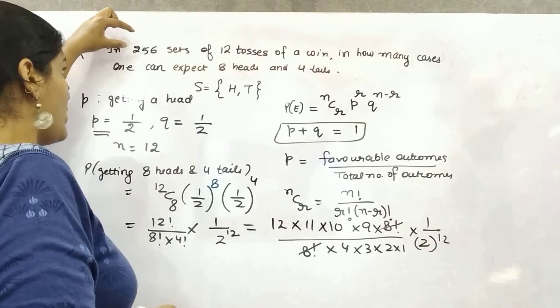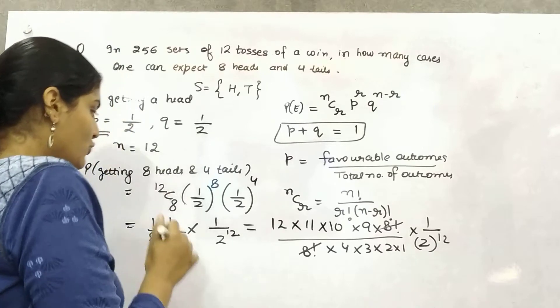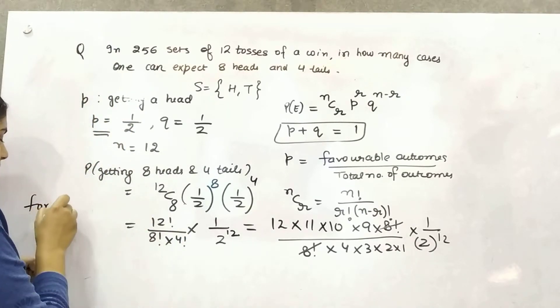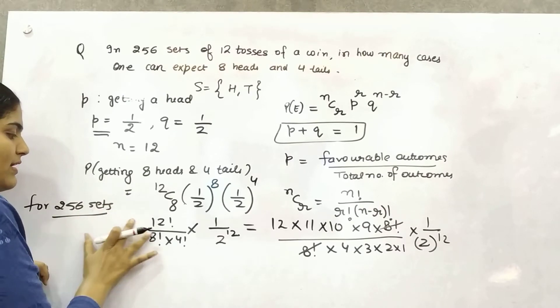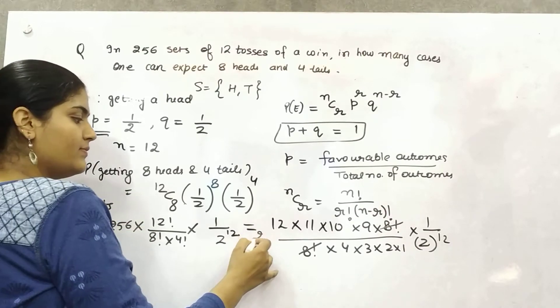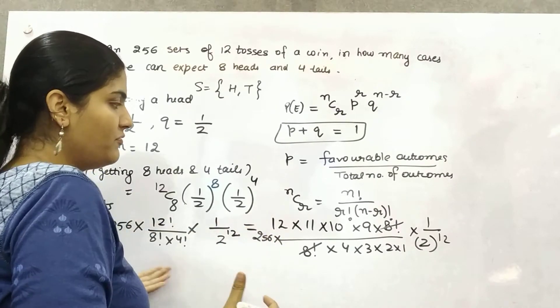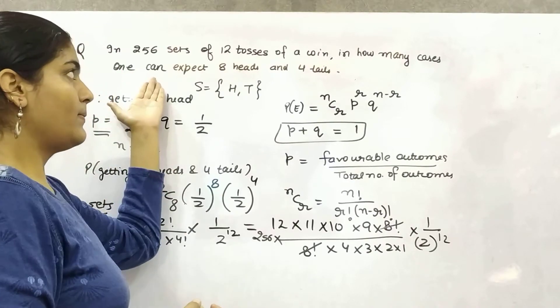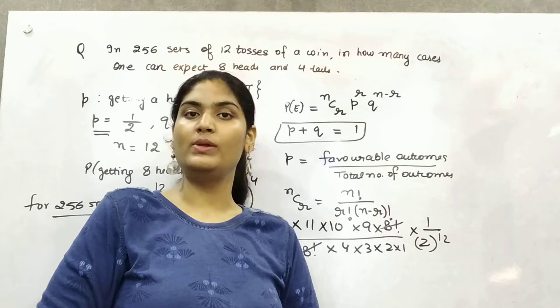Now, because you want 256 sets, this is one set. So for 256 sets, what do you need to do? You have to simply multiply it with 256. This is how you can find out the repetitive event series with the help of binomial distribution.